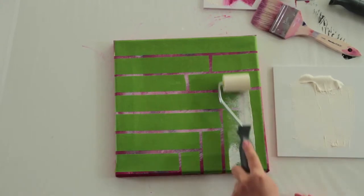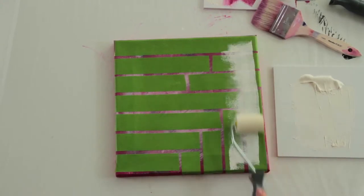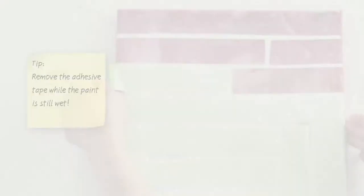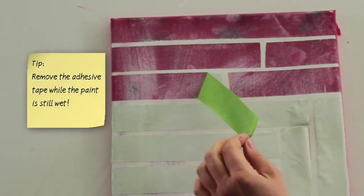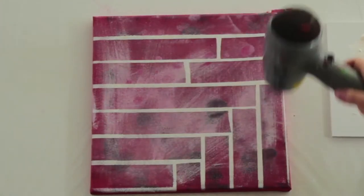Then apply the white acrylic paint to the entire surface with the paint roller and remove the adhesive tape while the paint is still wet. Dry the paint with a hair dryer.